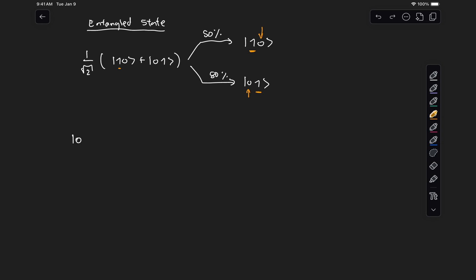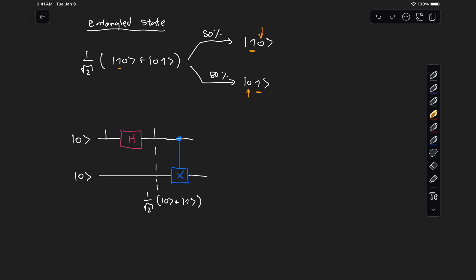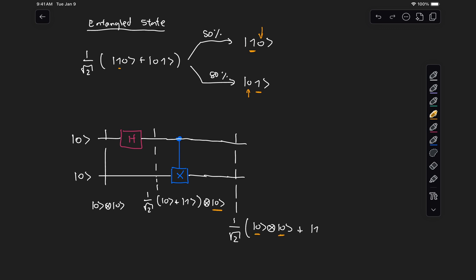If we start with a qubit in state 0 and apply a Hadamard gate to it, we place it in an equal superposition of 1 over root 2 times state 0 plus state 1. Now if we take a second qubit and apply a controlled-X gate with the control at the top qubit and the target at the bottom qubit — at the beginning we start in state 0 tensor 0. After the Hadamard gate, the top qubit is in superposition but the bottom one is still in state 0. After the CX gate, we get 1 over root 2 times state 0 tensor 0 — because when the control qubit is at 0 the target remains at 0 — plus state 1 tensored with state 1, since now the bottom qubit flips. So here we've generated an entangled state, because as you can see, this is not factorizable.